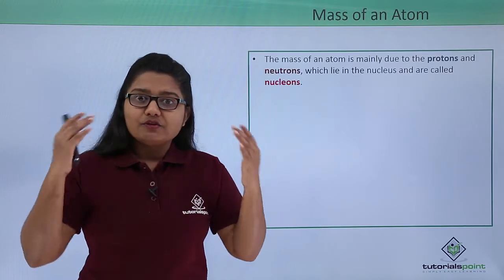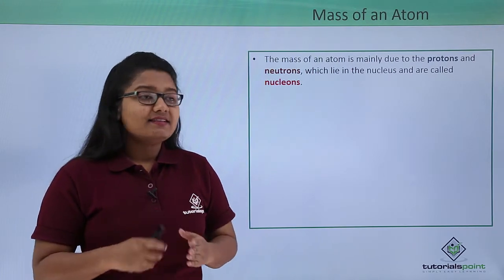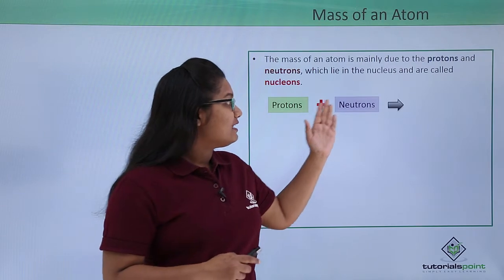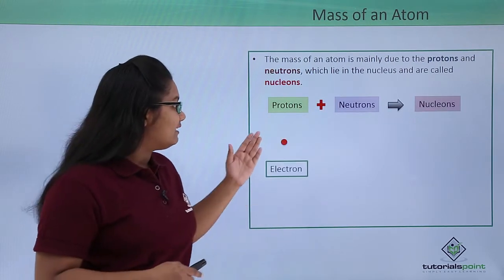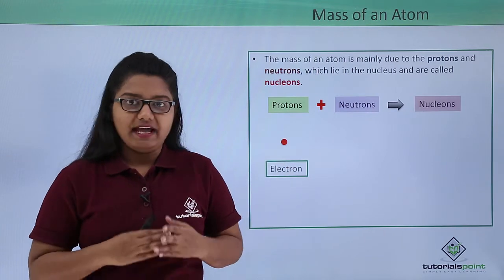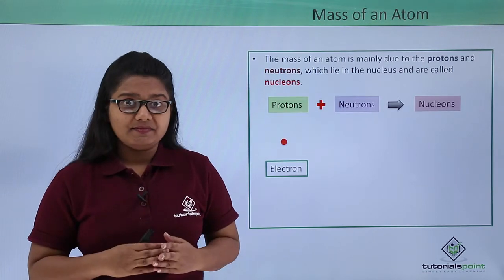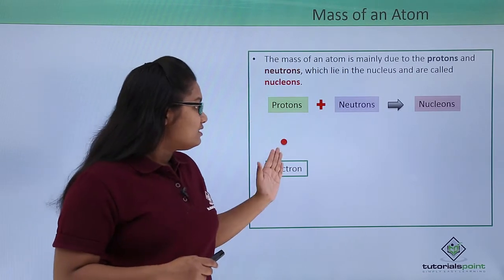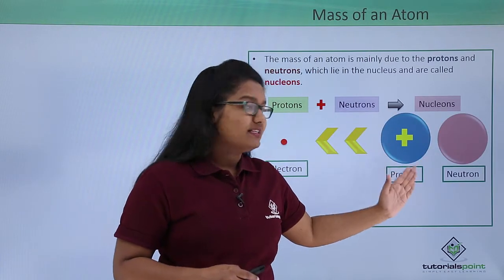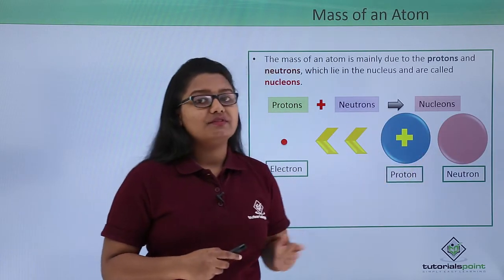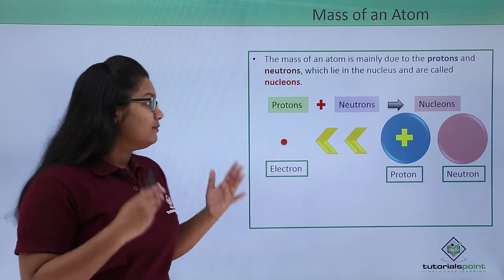From Rutherford's atomic theory, almost all the mass of an atom resides in the nucleus. Since the nucleus has protons and neutrons, they are altogether called nucleons. The electrons that lie outside the nucleus hardly make any significant contribution to the total mass of an atom, because the mass of an electron is very negligible compared to the mass of the nucleons, that is protons and neutrons. That is why we don't consider the mass of an electron when calculating the mass of the atom.